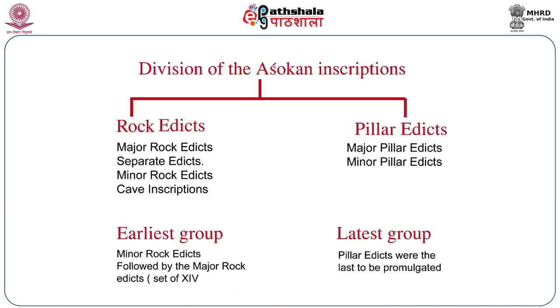The major rock edicts are 14 in number, from 1 through 14. D.C. Sarkar added to them 15 and 16, whereas other scholars mentioned rock edicts 15 and 16 as separate edicts. We would prefer the term separate edicts here, following the term designated by Sarkar. The pillar edicts were the last to be promulgated.